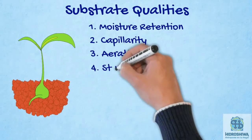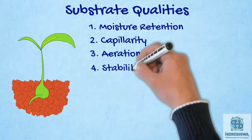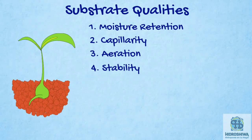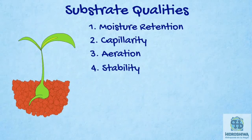The compaction and decomposition of the substrate can cause a reduction in the pore space and in the aeration capacity throughout the crop. That is why stability is one of the physical properties of vital importance in long-term crops. The most unsuitable substrates are those that crumble easily with the action of water.